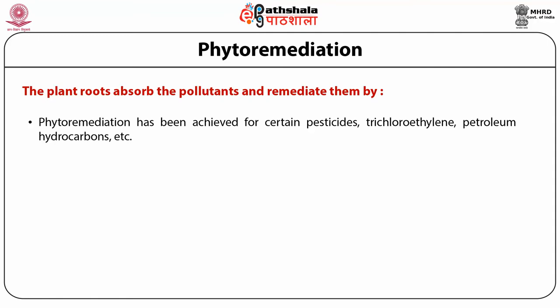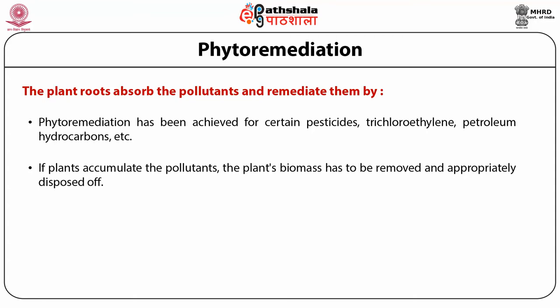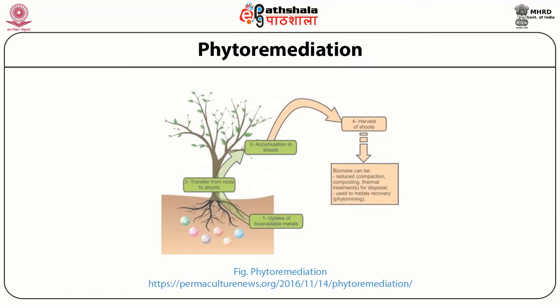Phytoremediation has been achieved for certain pesticides like trichloroethylene and petroleum hydrocarbons. However, the overall degradation or remediation is relatively slow. If plants accumulate the pollutants, the plant biomass has to be removed and appropriately disposed of. For example, carrots are used to absorb DDT — these carrots are harvested, air dried, and incinerated to decompose the DDT. Transgenic plants may also be used; for example, Arabidopsis thaliana, which absorbs mercury, has been incorporated with genes coding for reductase.